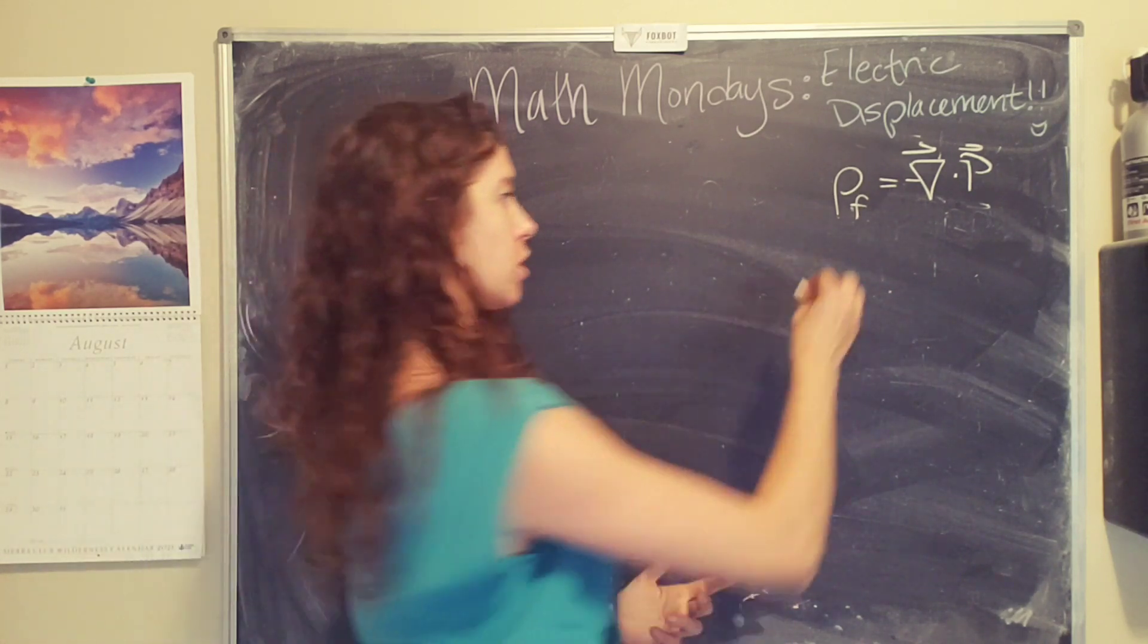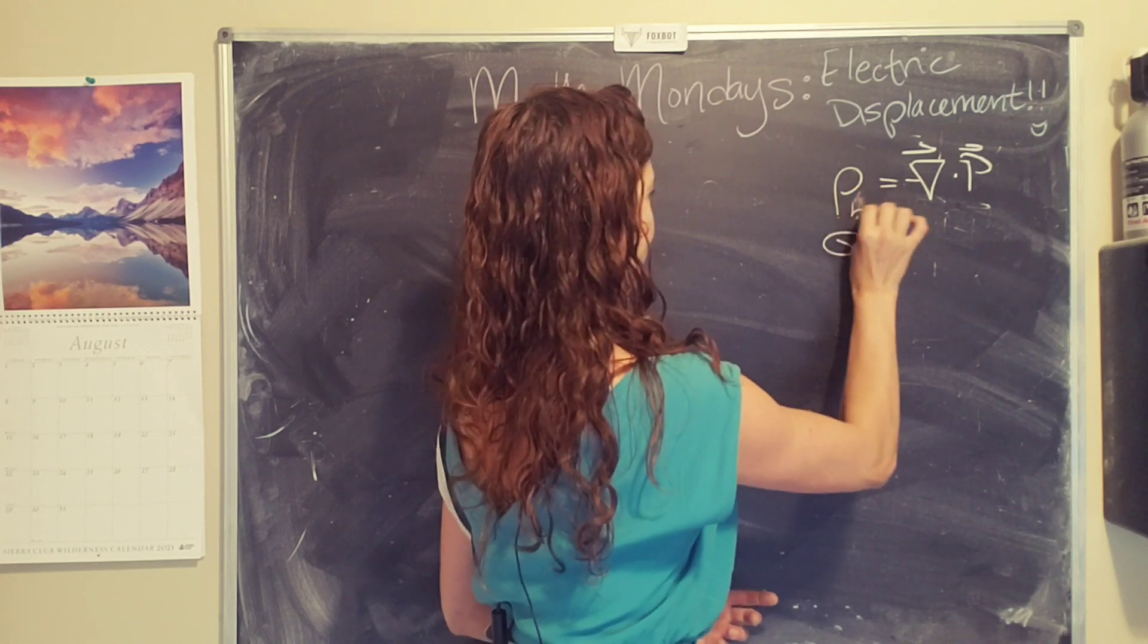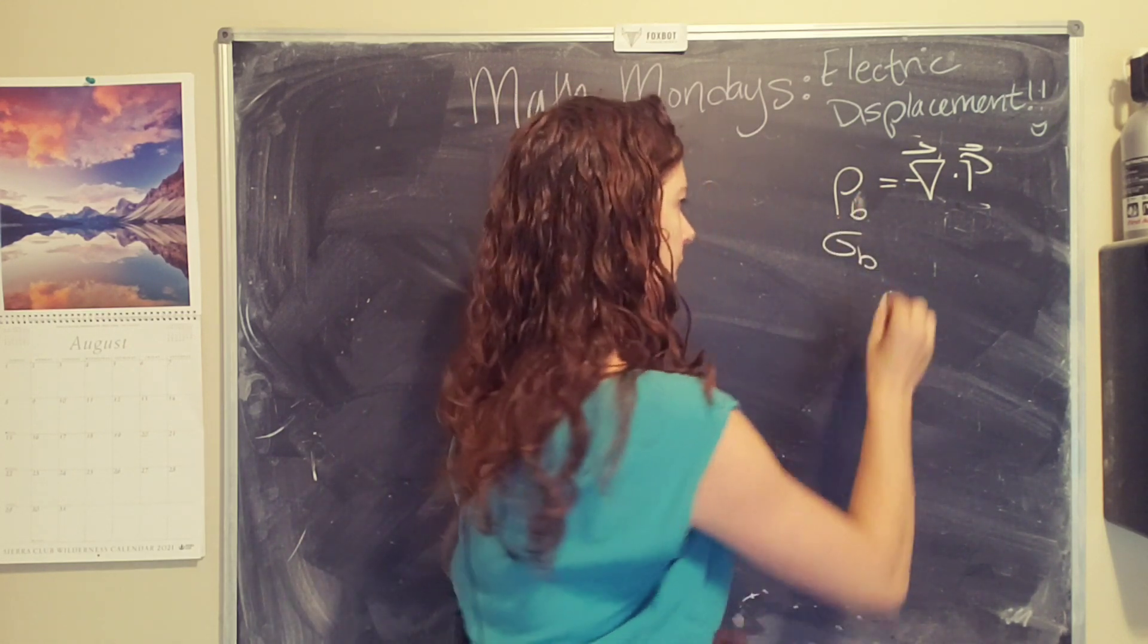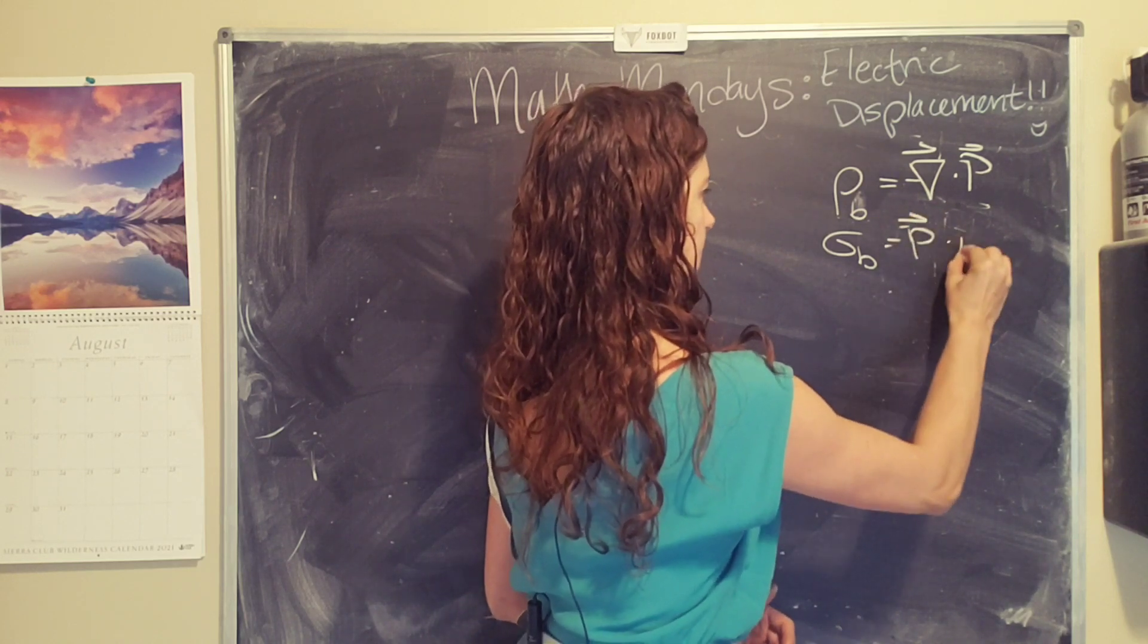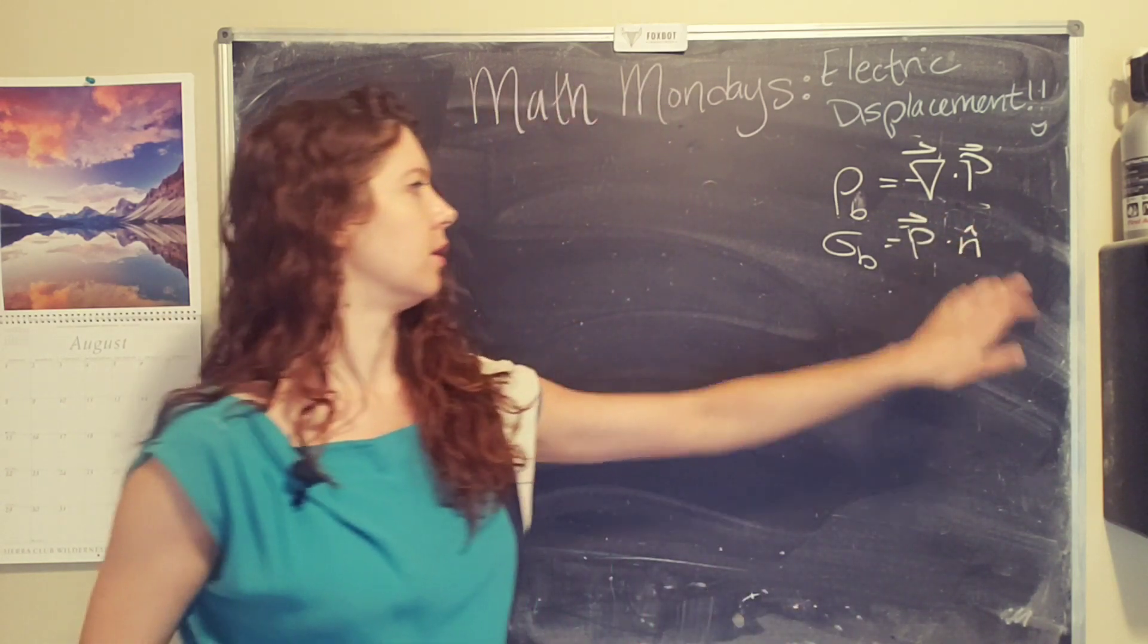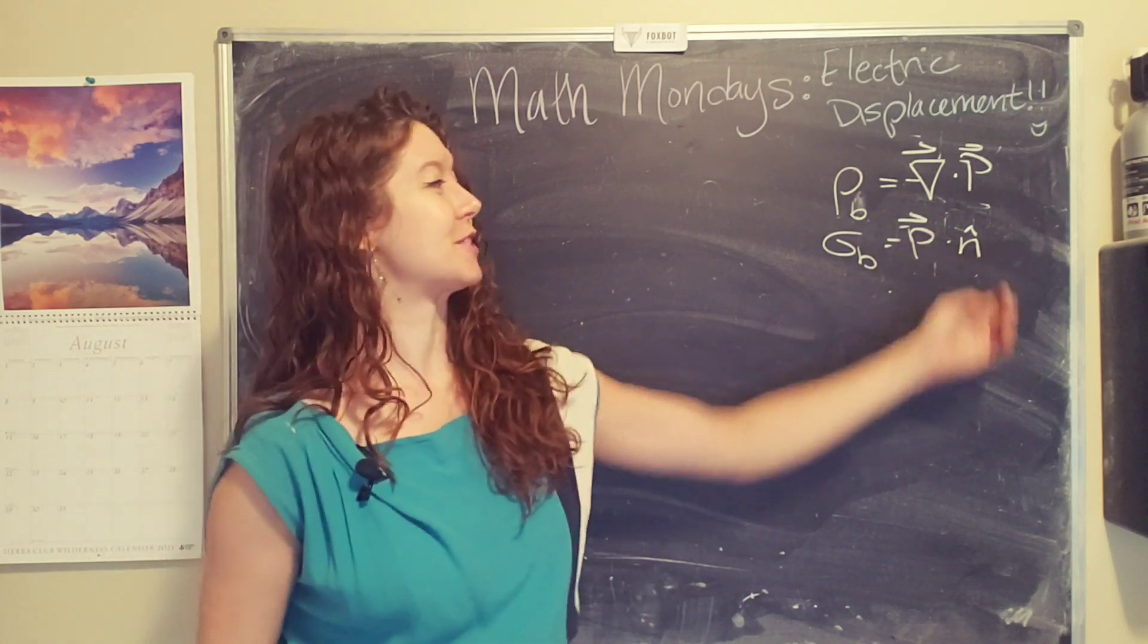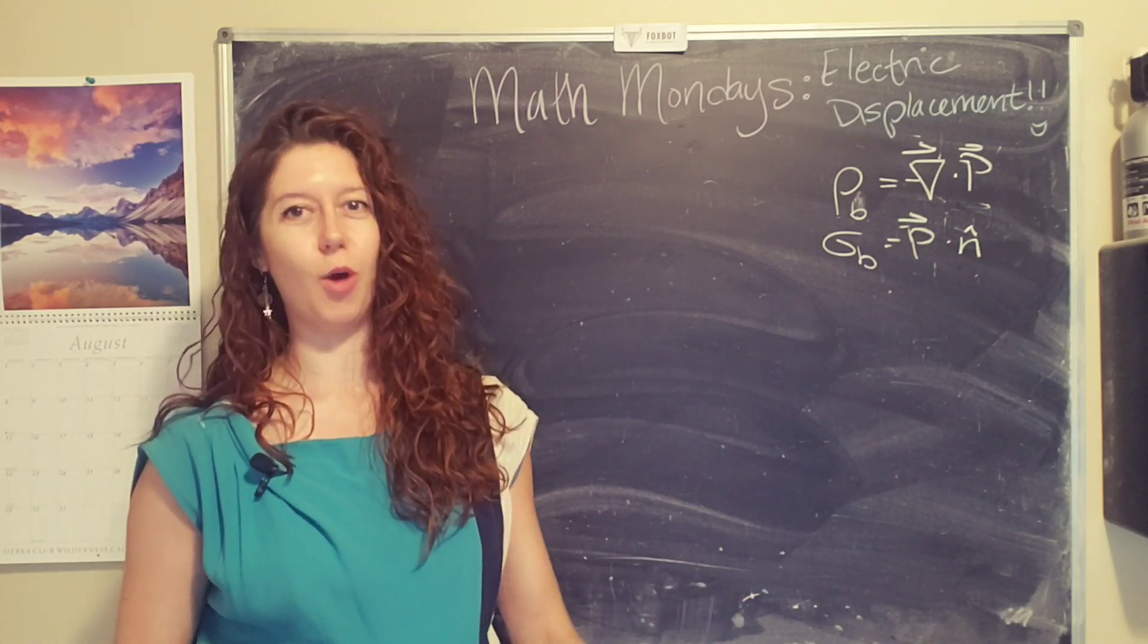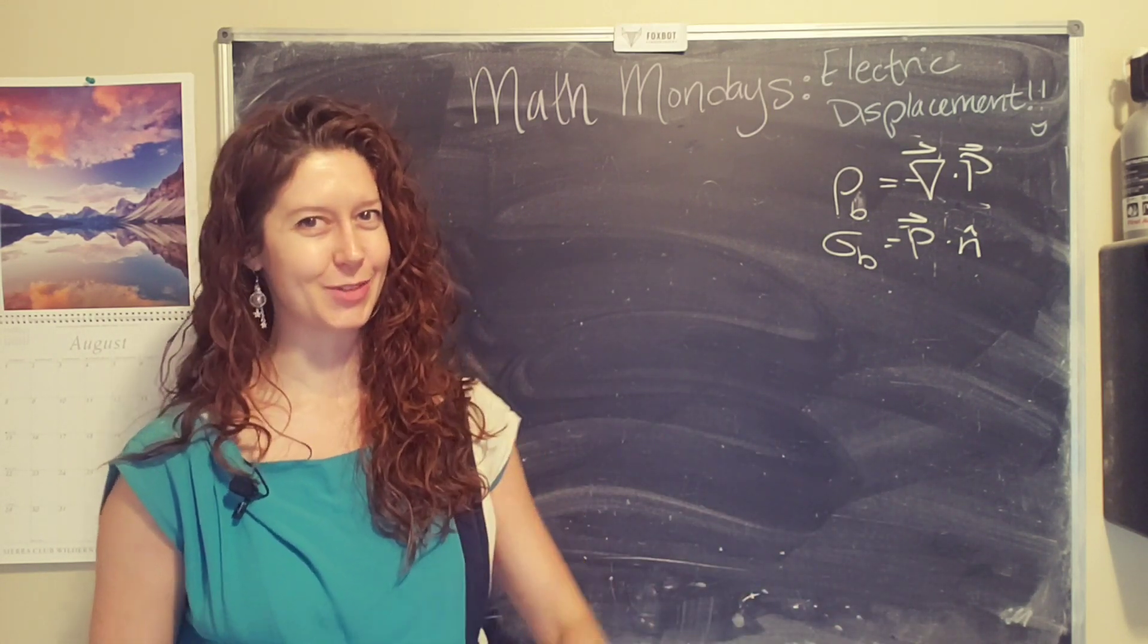And a surface charge, sigma bound, which is equal to the total polarization dot the surface unit vector, which points radially outward of the surface.